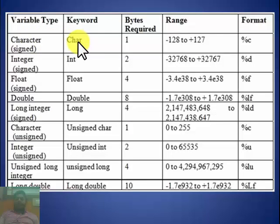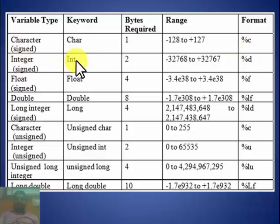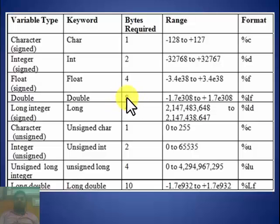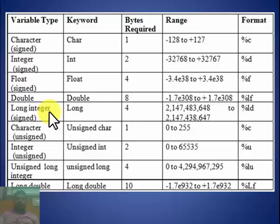First, char: keyword is char, memory requirement is 1 byte, range is -128 to 127. Integer: keyword is int, memory requirement is 2 bytes, range is -32768 to 32767. Float: these are decimal numbers, keyword is float, memory requirement is 4 bytes, range is -3.4×10^38 to 3.4×10^38. Double: also decimal numbers but memory requirement is 8 bytes (double that of float), range is -1.7×10^308 to 1.7×10^308. Long integer: similar to integer but with double the range, taking 4 bytes.